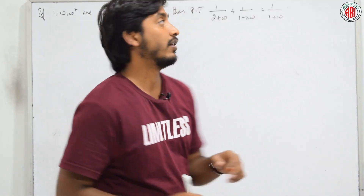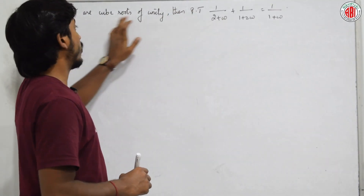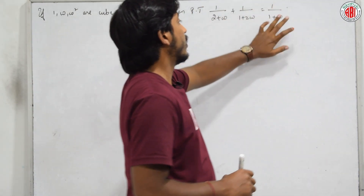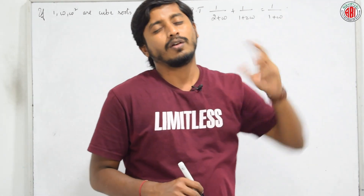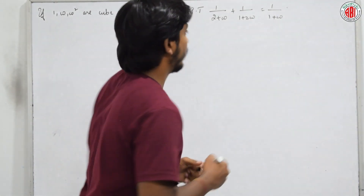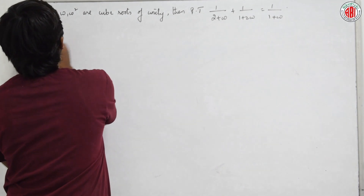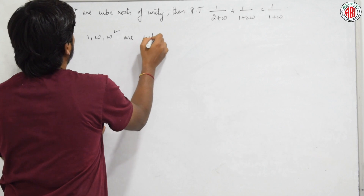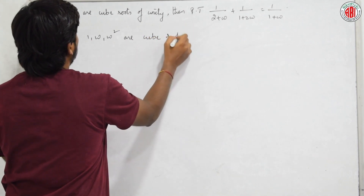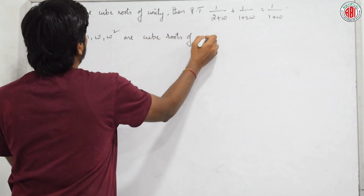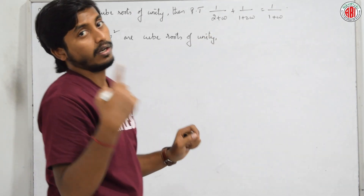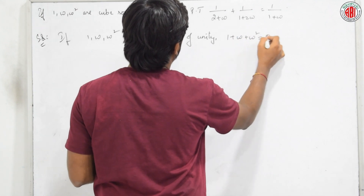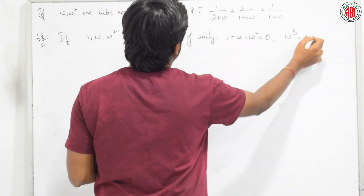The next problem: 1, ω, ω² are cube roots of unity. Prove that 1/(2+ω) + 1/(1+2ω) = 1/(1+ω). Recall that for cube roots of unity, 1 + ω + ω² = 0 and ω³ = 1.